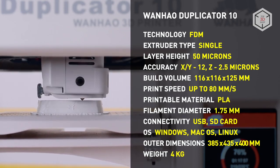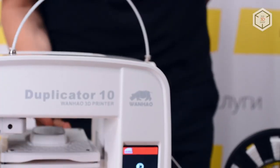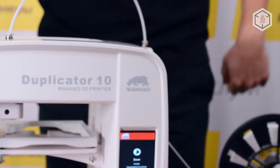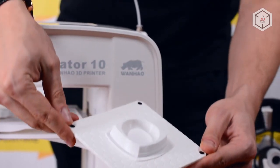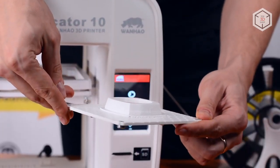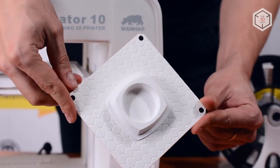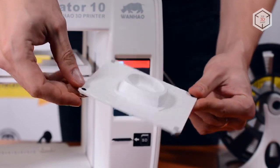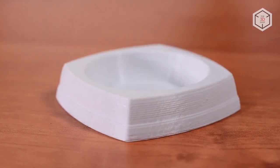The platform is equipped with a detachable plate on magnets, which makes removing the finished workpiece incredibly easy. The surface of the plate is covered with a relief pattern in the form of honeycombs. This greatly improves adhesion and provides easy removal of the printed models.